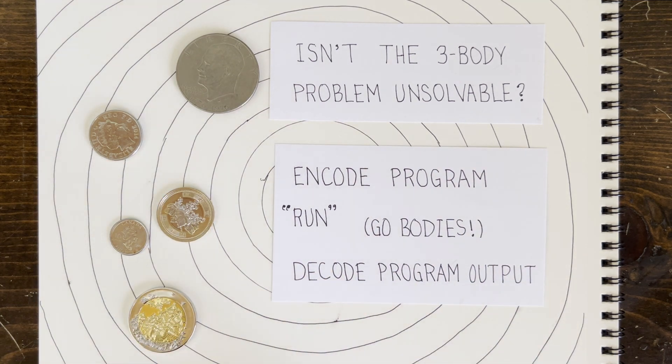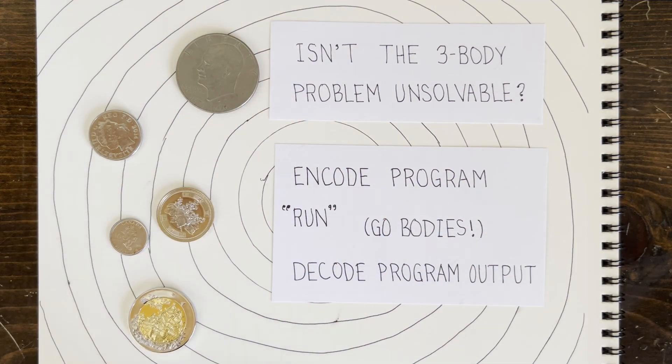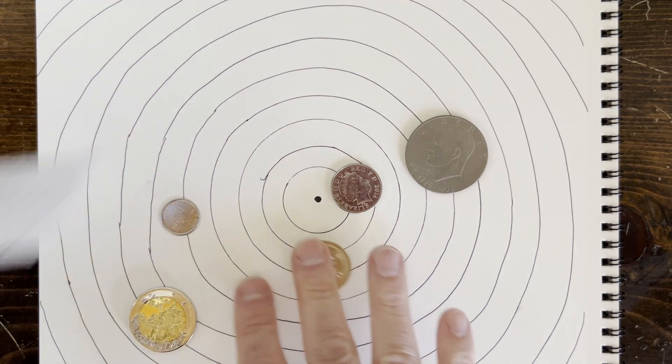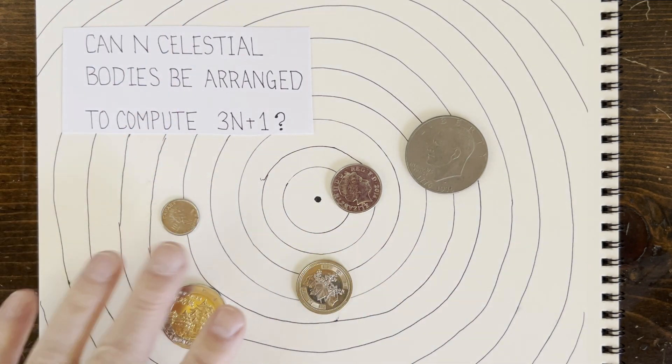Okay, well, that's kind of mind-blowing and certainly makes simulating 3n plus 1 seem a little bit more reasonable. So how to program n-bodies to do something?